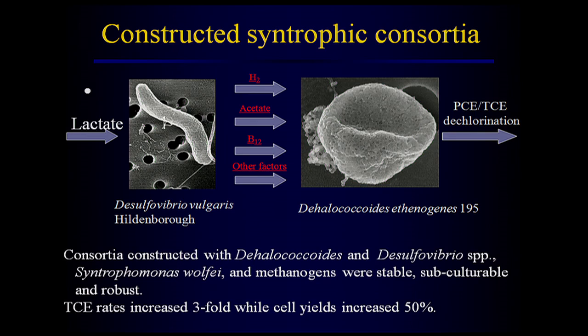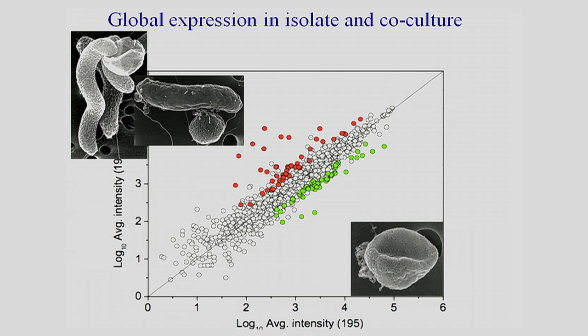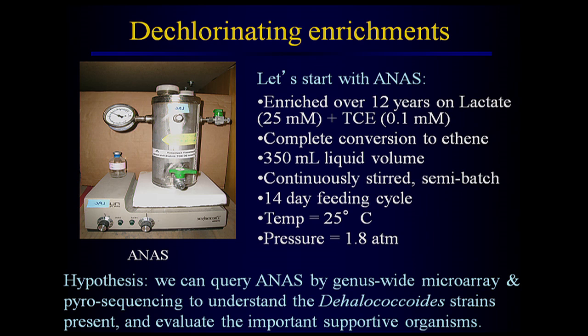In applying the microarray to look at which genes were turned on and off in the co-culture versus the isolate, we were able to identify on the order of 30 genes that are upregulated under co-culture conditions. Those genes tend to be related to hydrogenases as well as to B12 synthesis. There were also some stress-related genes that were downregulated. Moving on from the co-culture up into the enrichment cultures — enrichment cultures have a variety of different organisms, maybe tens to hundreds. The one we spent a lot of time studying is called ANAS, which stands for Alameda Naval Air Station.